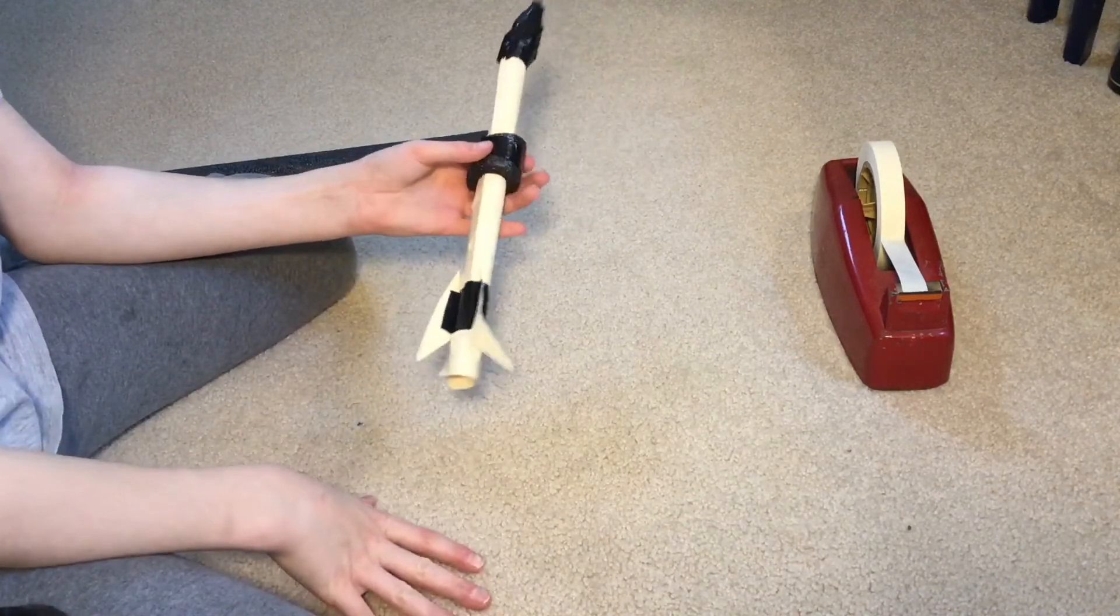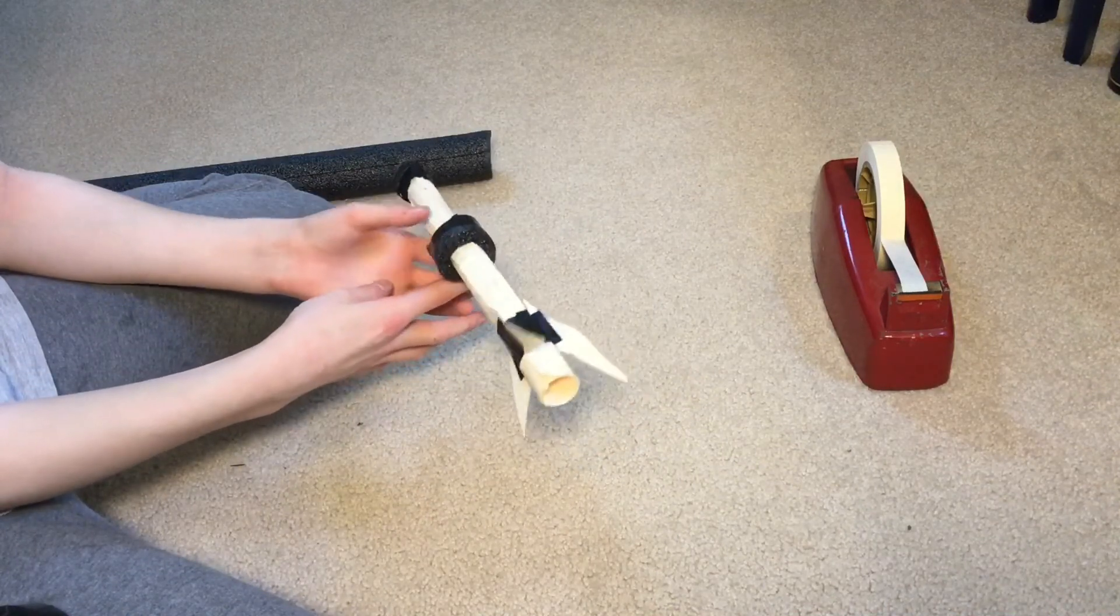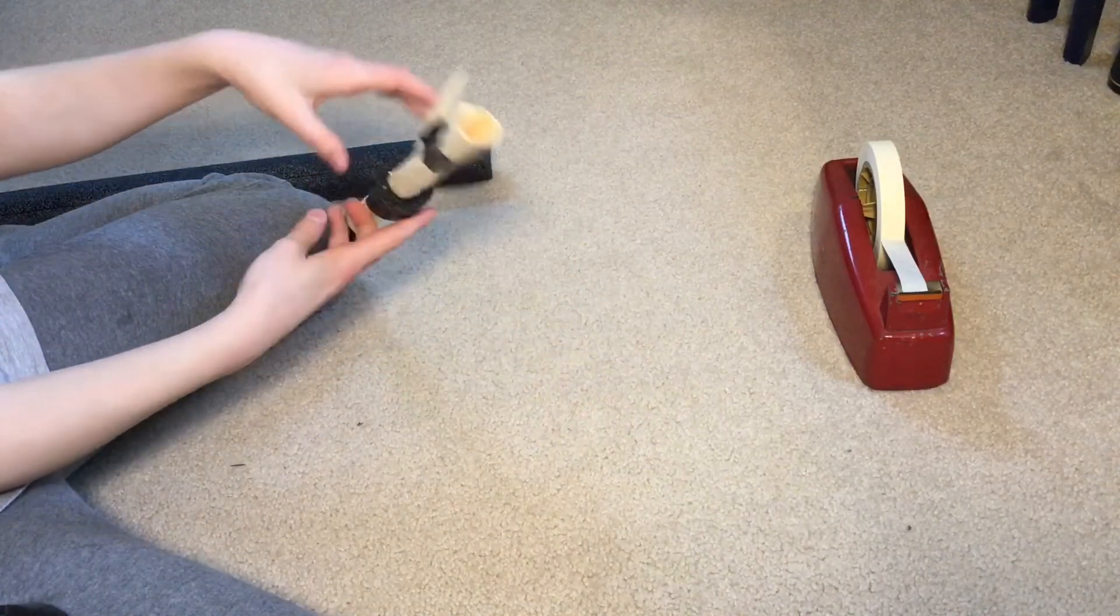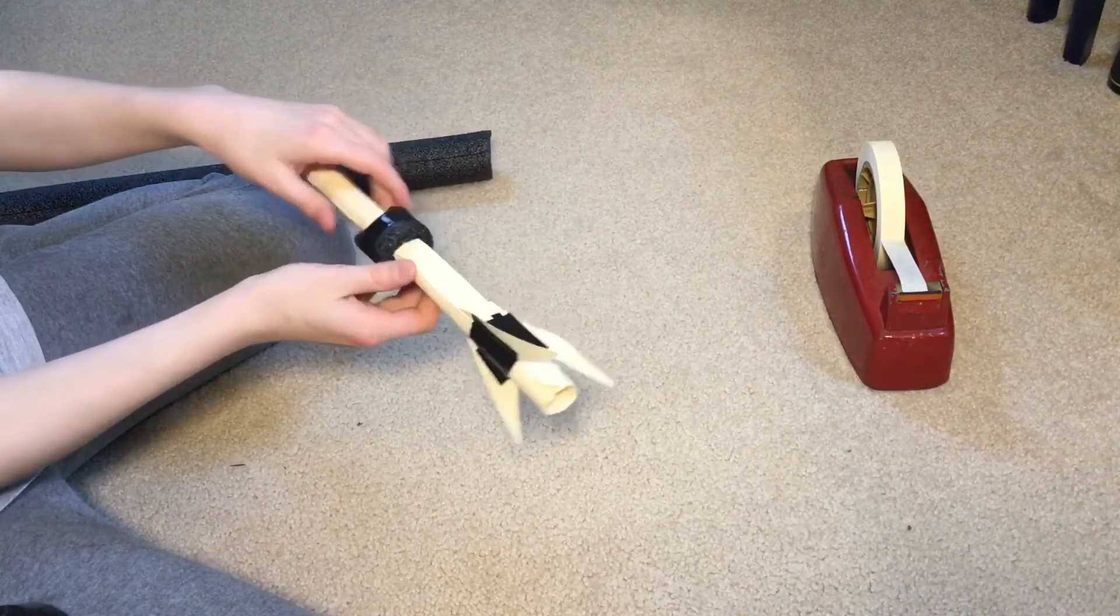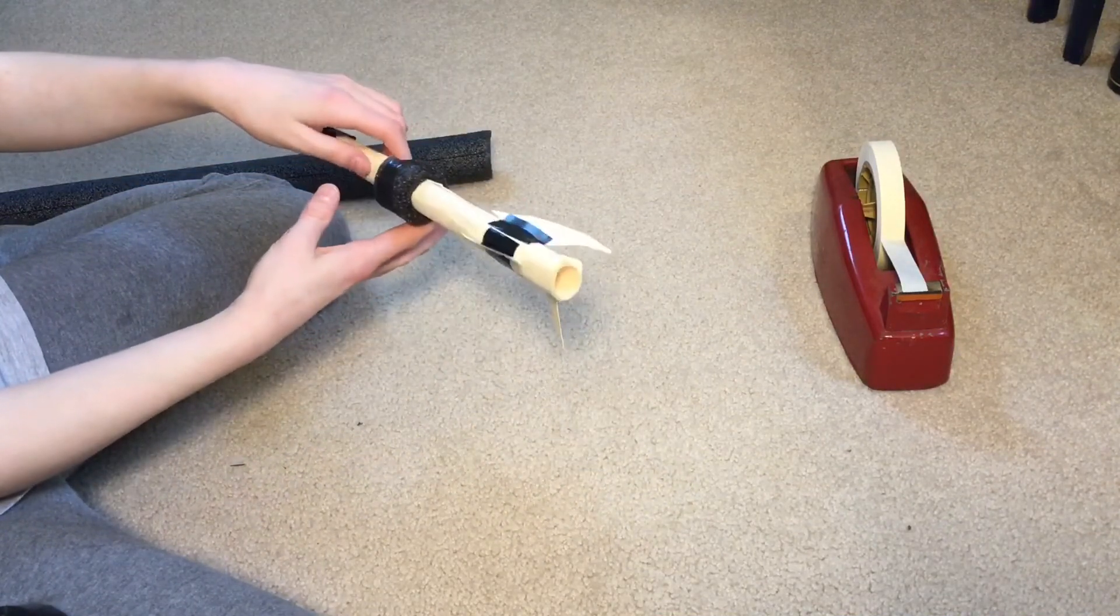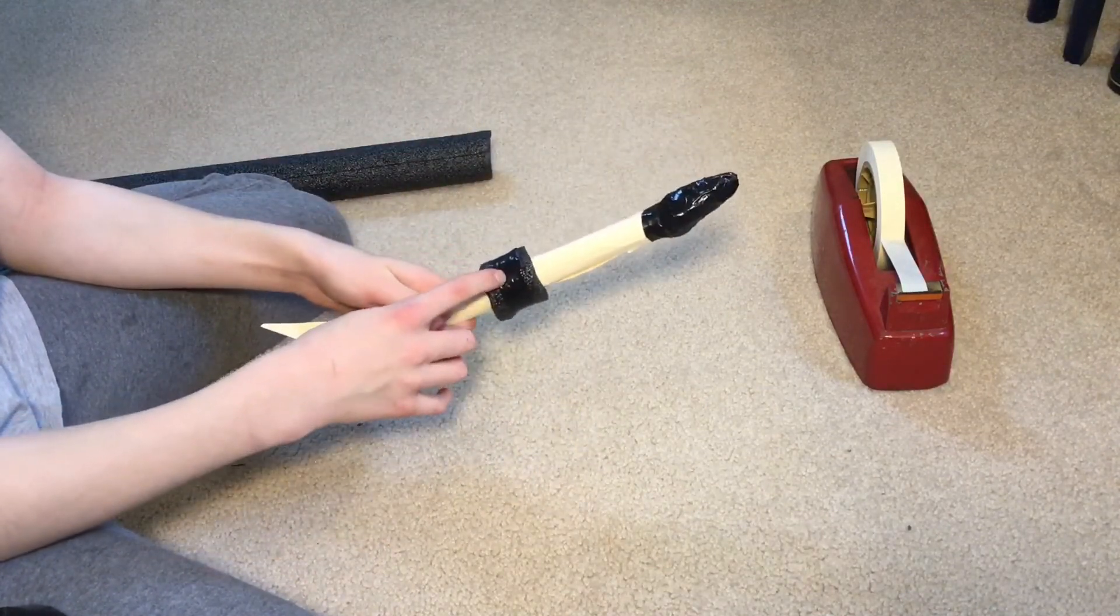And then you can slide it to wherever you think your center of mass is. So if I put my finger in the middle of my fuselage, this side falls. So I'm going to slip it over right here. Now that side falls. Slip it over a little bit. And then right there, that's about the center of mass. So that's about where you want your fuselage.